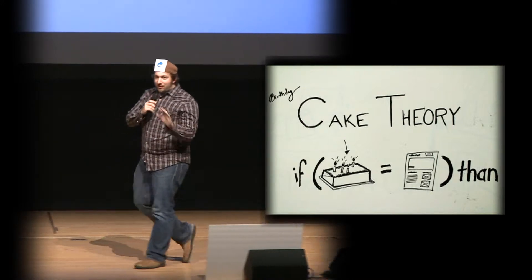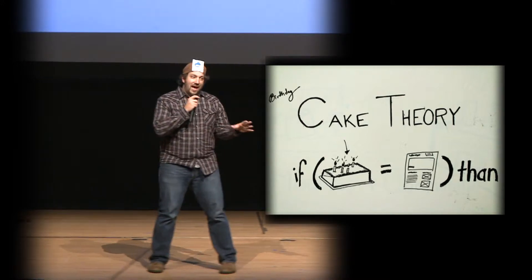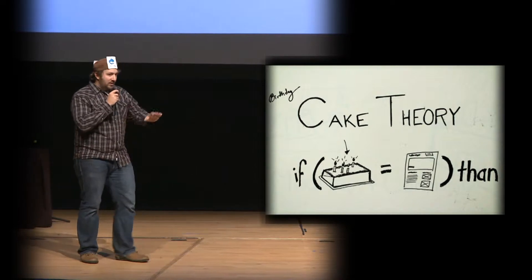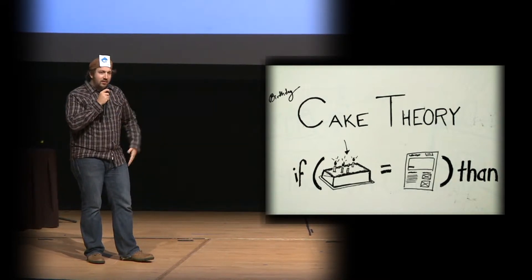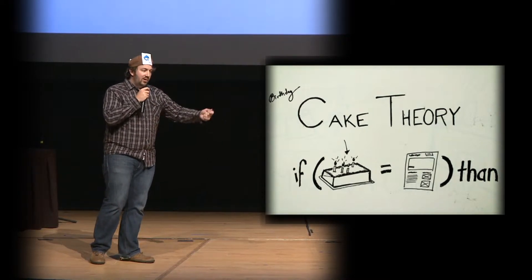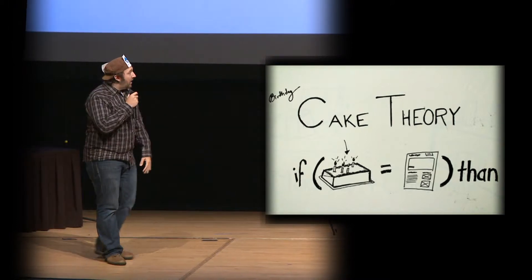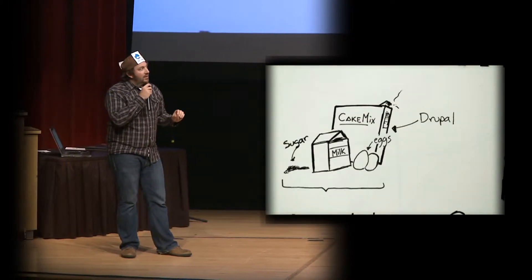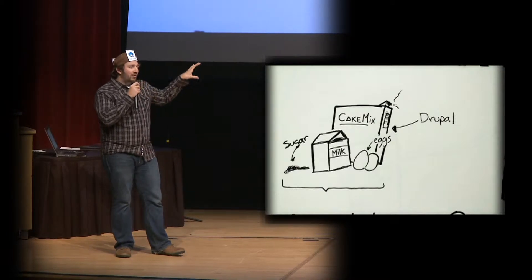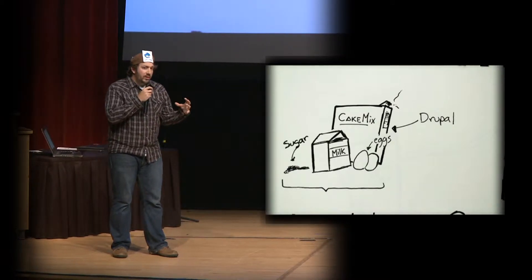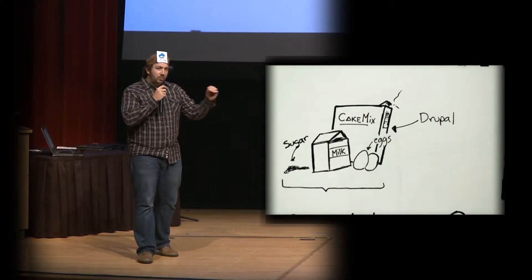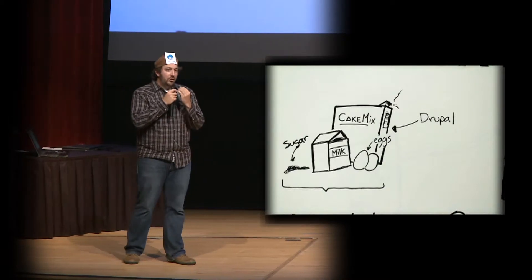So Drupal, there's something called the birthday cake theory. And what that is, is that when you get another content management system, say like WordPress, it's like going to the store and buying a cake. It's done. You put your name on it. Great. Out of the box.